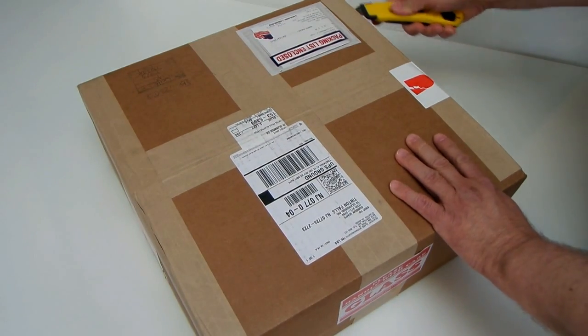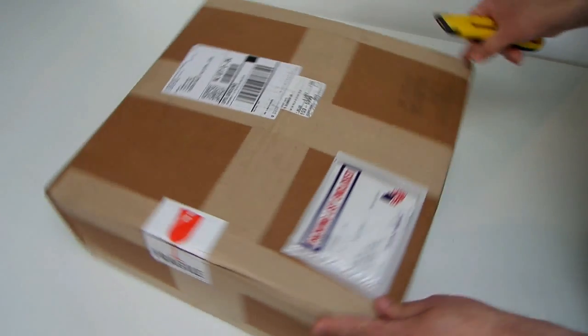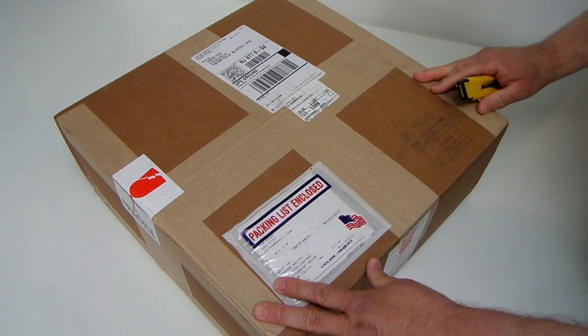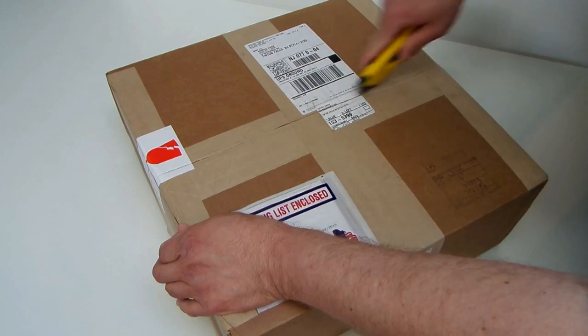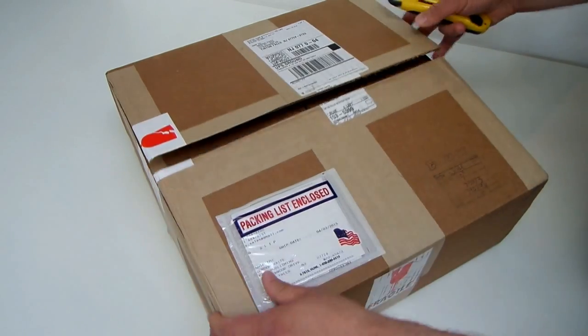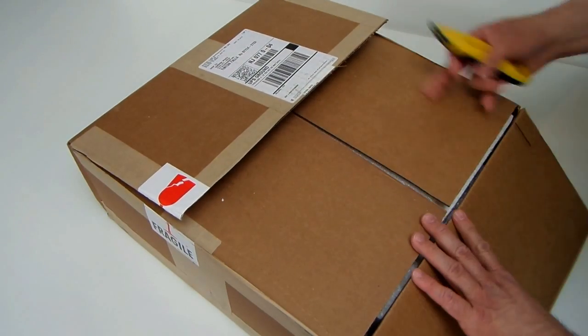We're going to make this one on a borosilicate substrate. It's a 12 inch F4.9 mirror and I just ordered the blank to be fabricated at Newport Glass in California and we've just received it.